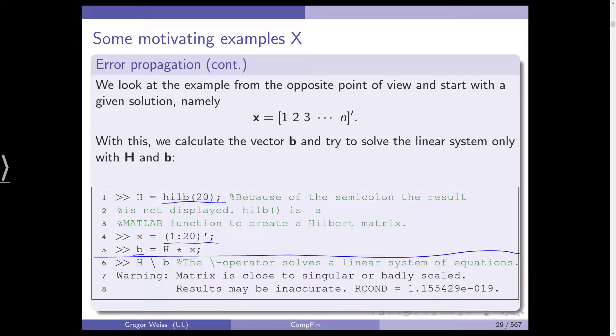And now, we forget about x, we do have h and b, and then, we are using this backslash operator, which solves a linear system of equations. So, h, backslash, b gives us x. It should give us x. Let's see what happens.